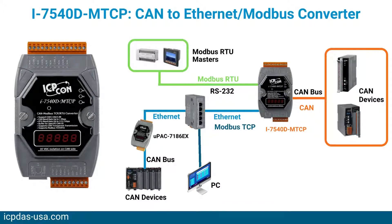The I-7540D-MTCP is a CAN to Ethernet Modbus TCP/Modbus RTU converter. It is helpful for exchanging data between Modbus devices and CAN devices. The device supports a transparent, protocol-independent transfer of CAN messages, allowing its implementation into a wide range of possible applications.